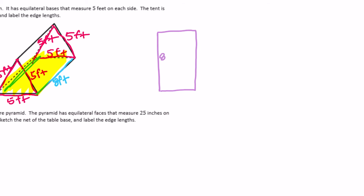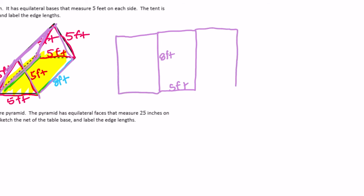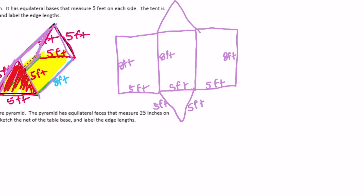So you have an 8-foot by 5-foot rectangle. There are three rectangular faces total, so I'm connecting three of them — another 8 by 5 on each side. Then we attach the equilateral triangles onto the sides that are five feet. I'm going to attach them on the middle ones. These triangles are five feet on all three sides. That is the net, or one example of what your net could look like.